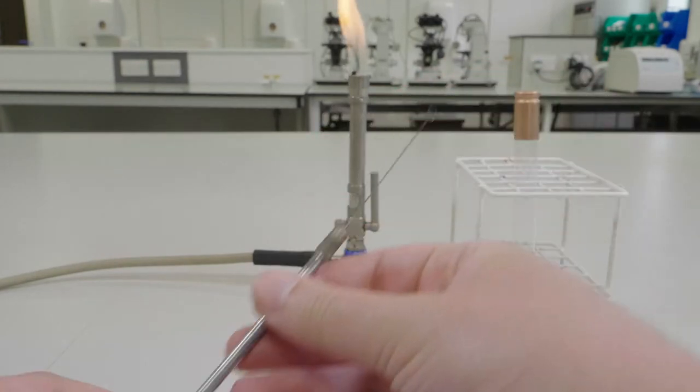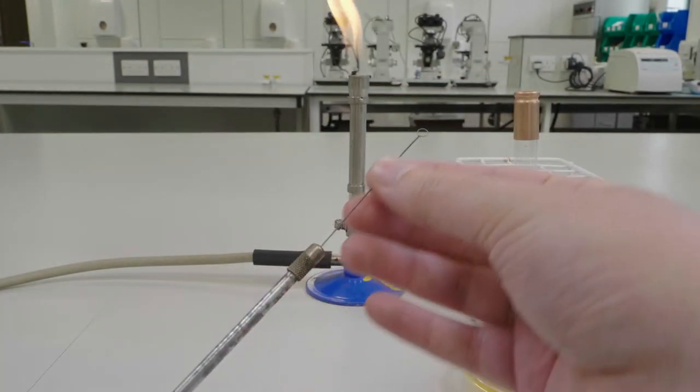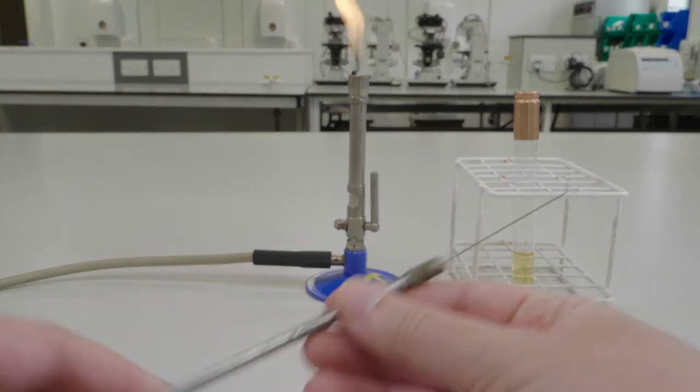Before working with it, make sure the wire loop is straight by running it between your thumb and forefinger.